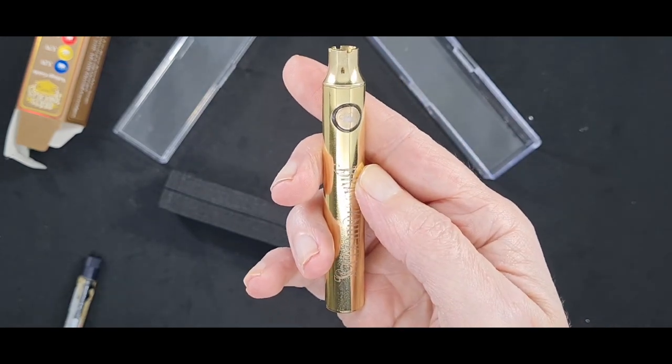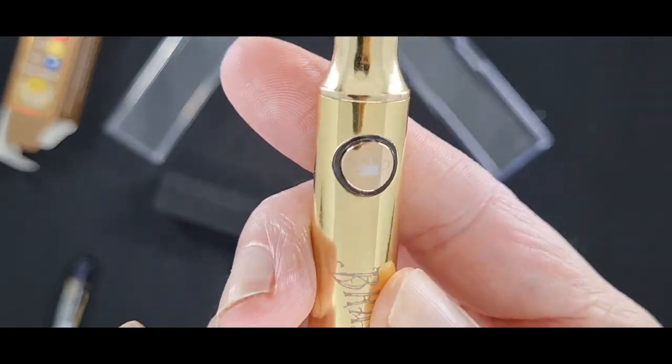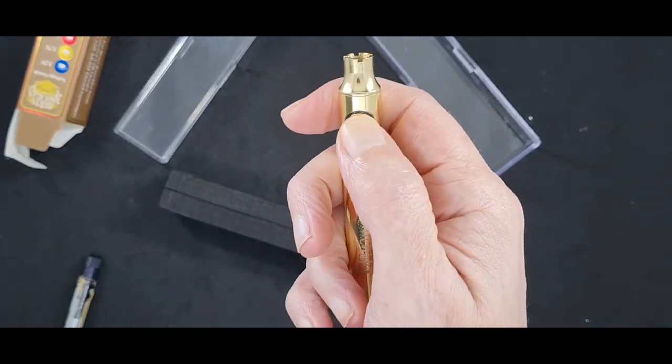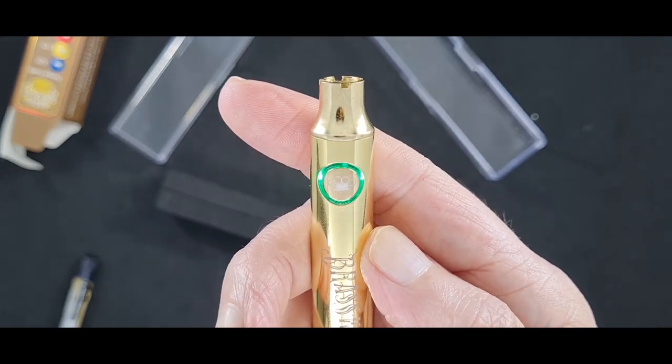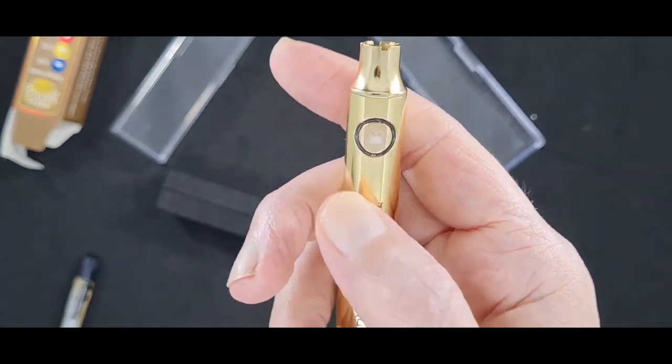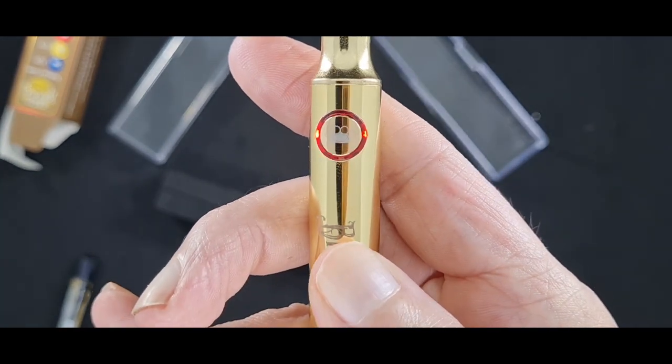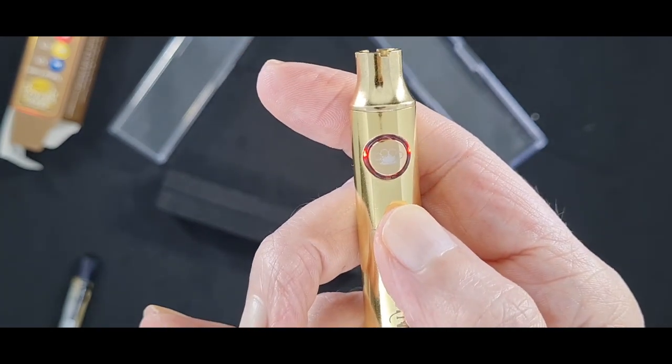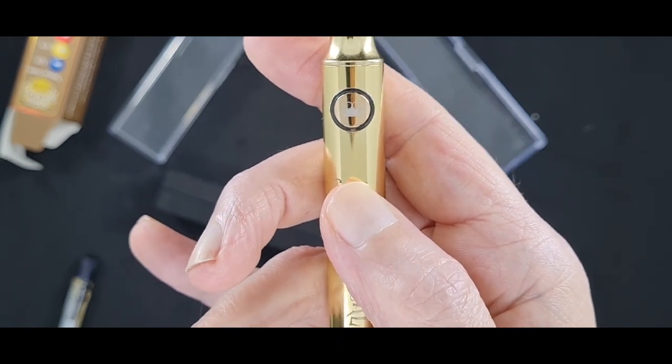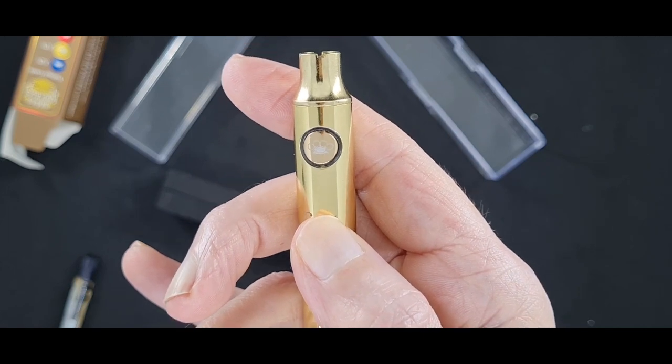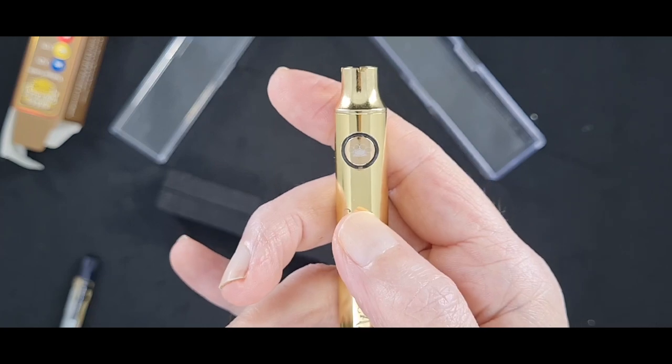One two three adjust the voltage. One two three there we have a green, we have a red, we have a blue. The blue is 3.2 volts, the green is 3.7 volts, the red is 4.1. Now the sweet spot for carts really is 3.7, the green.